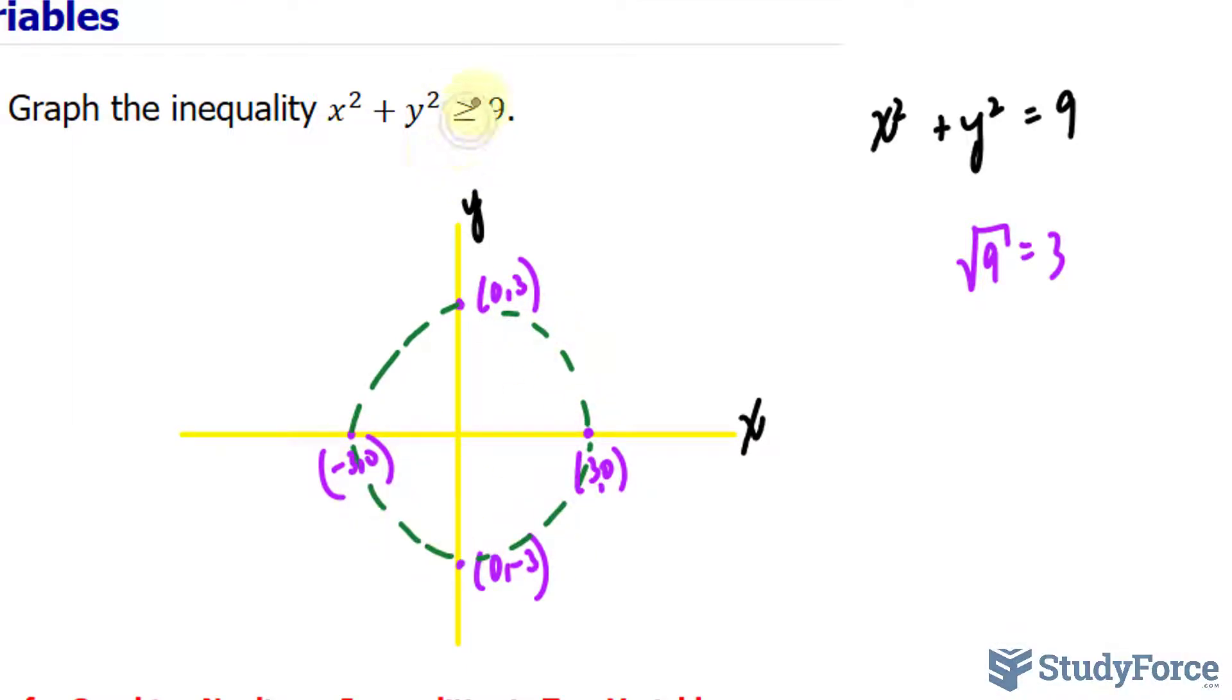Now, because our inequality is non-strict, notice that we have a greater or equal symbol here. If it were simply greater than or less than, it would be called a strict equality. This is non-strict. I will fill in these dashed lines with a solid line.